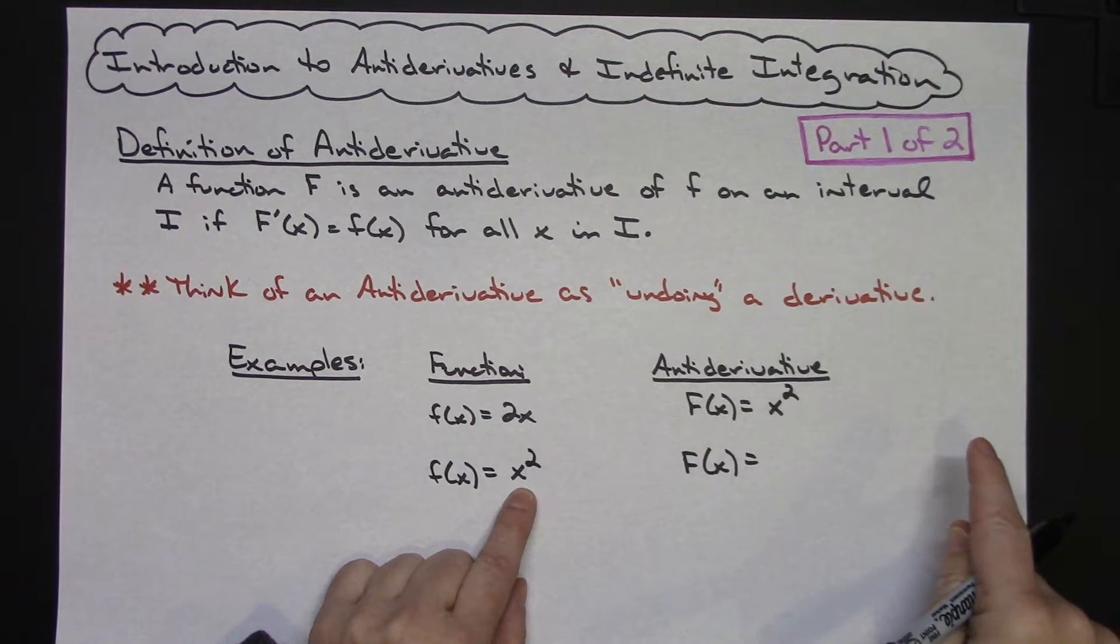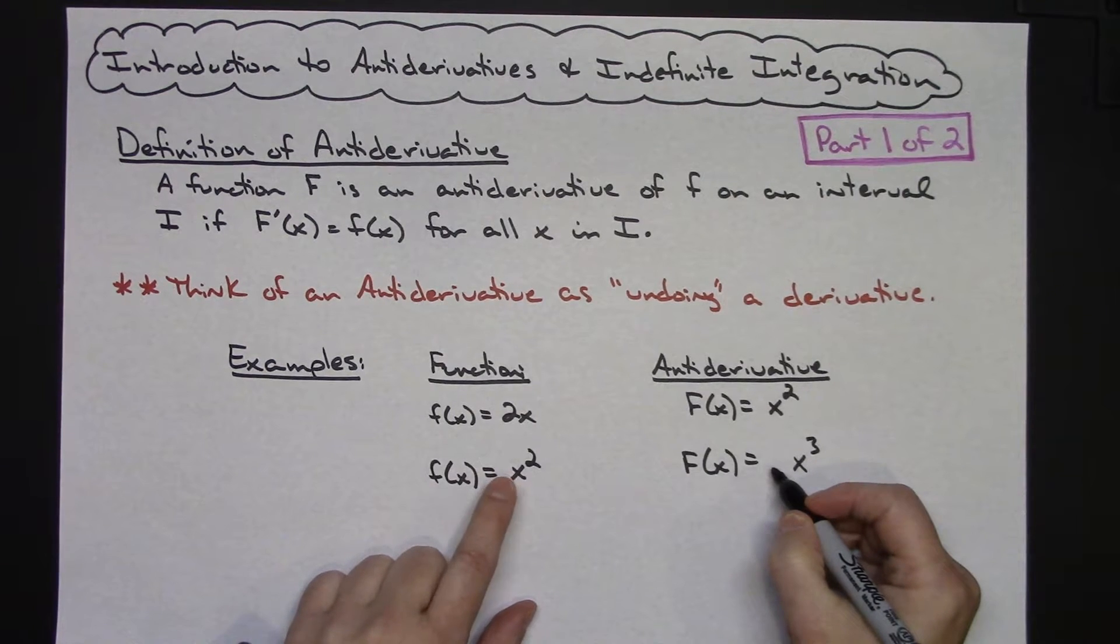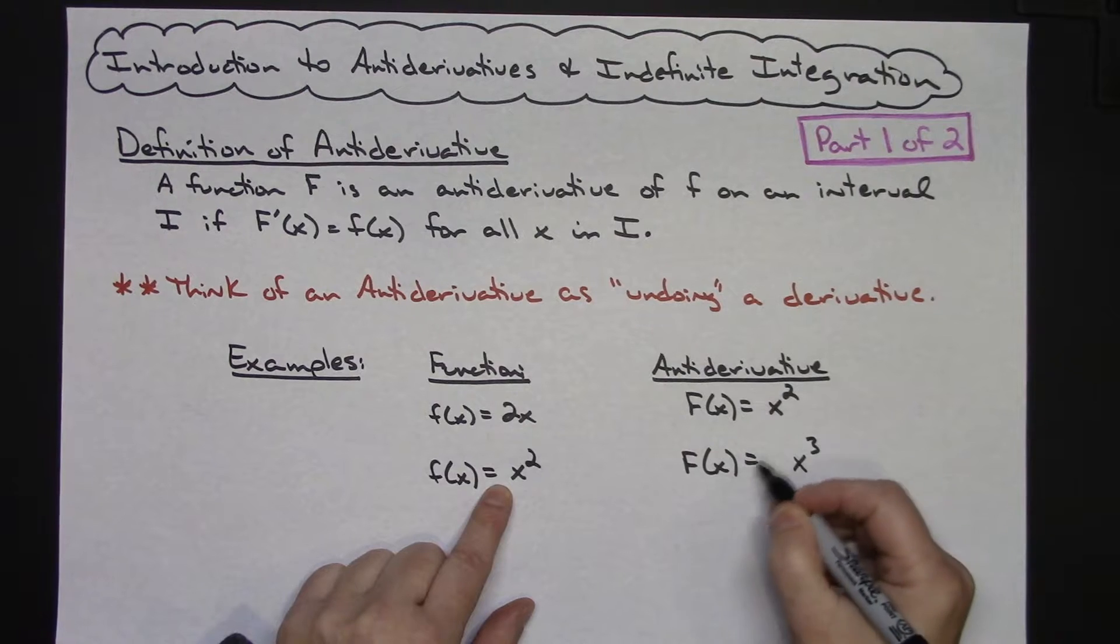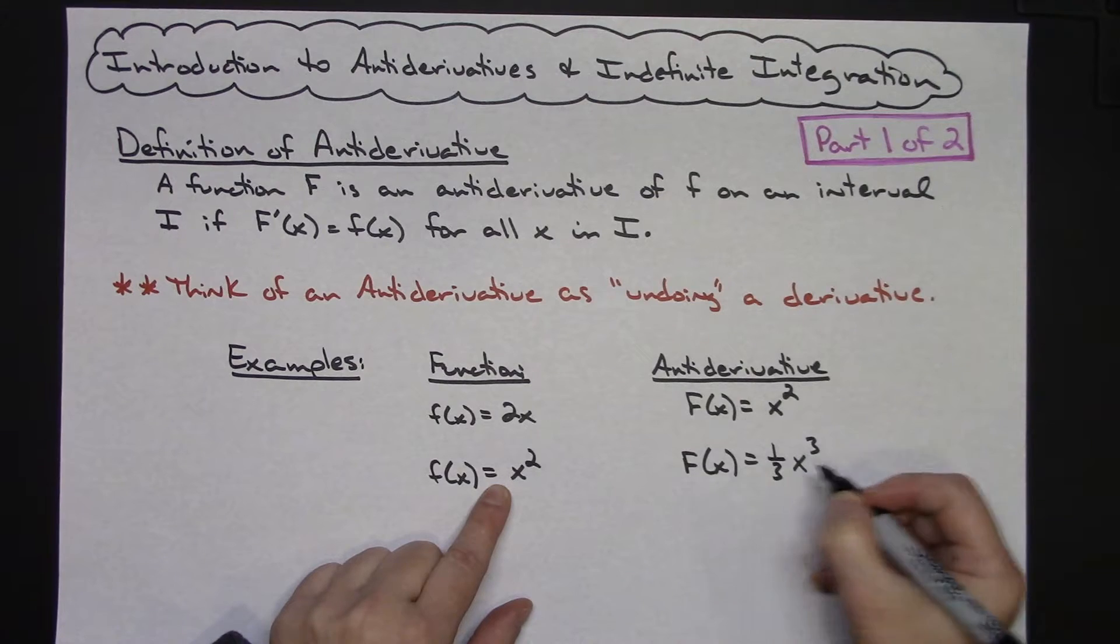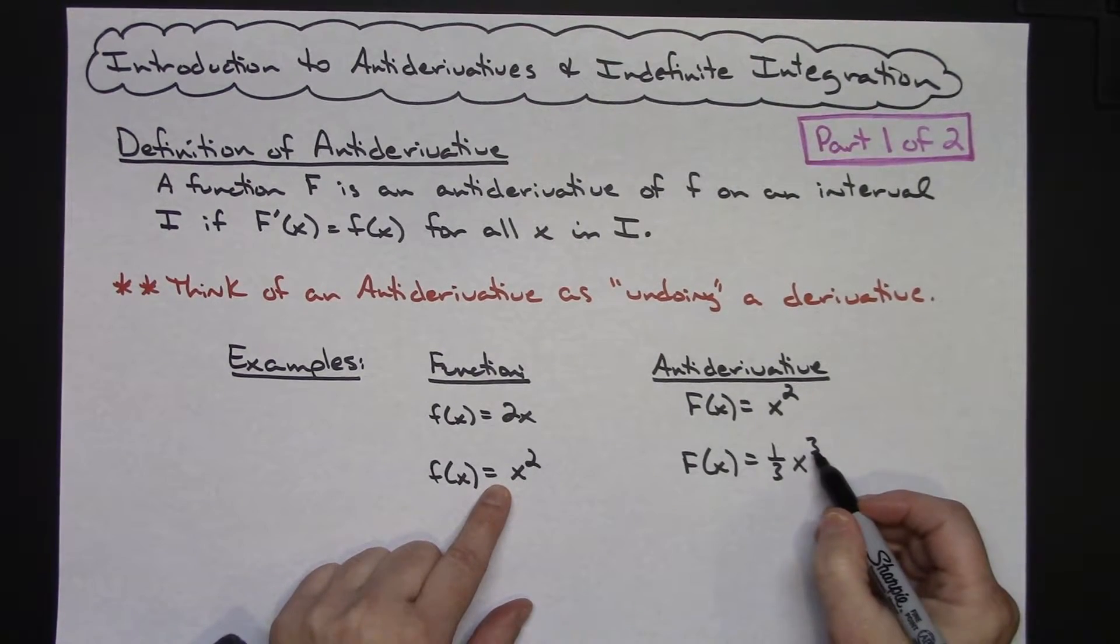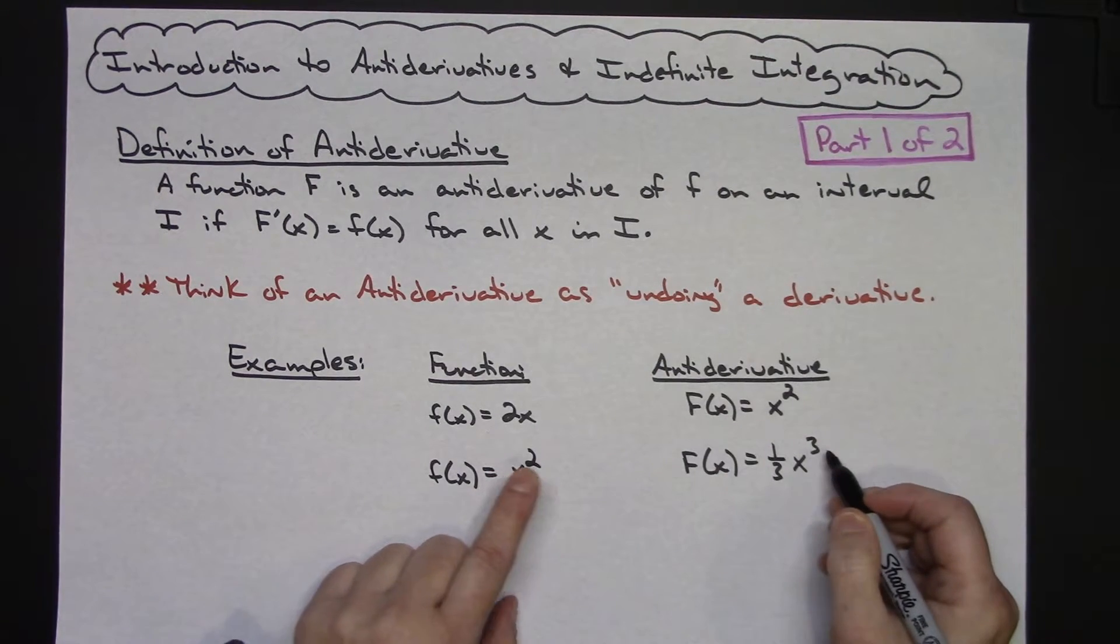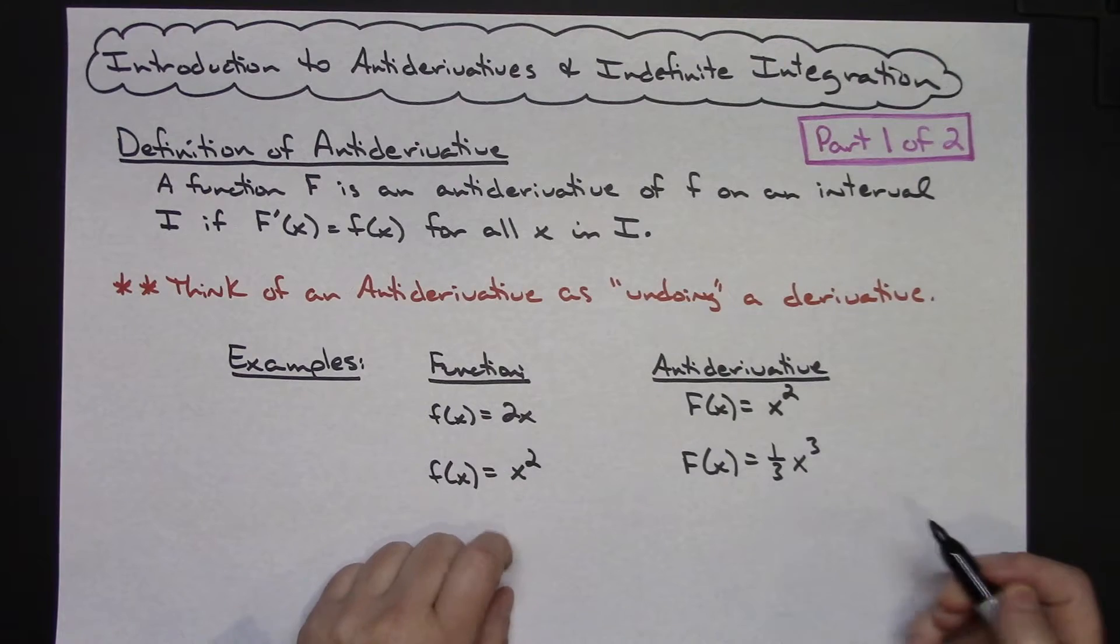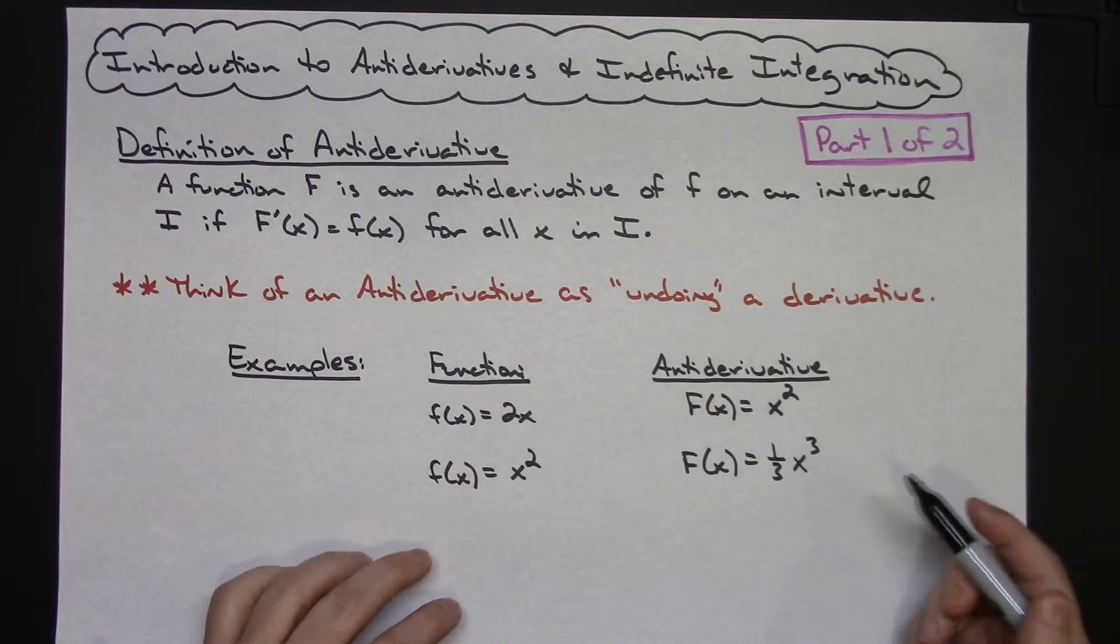Now the question is, if I ended up with a 1 here, what would have had to have been here when I pulled that 3 down to multiply it by to get a 1? Well, hopefully you can see that that would have been a 1 third. So there's my antiderivative. Pulling that 3 down, 1 third times 3 would give me the 1, subtracting 1 from the exponent would give me the 2 there. Now this is kind of like a little game and we're just kind of playing and we're thinking it through and it can work.